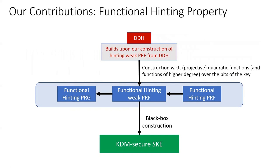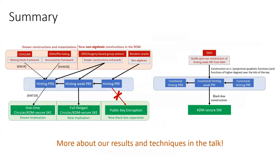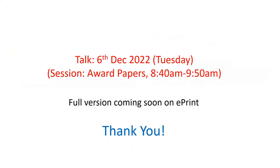Finally, we also show an instantiation of functional hinting weak PRFs from the DDH assumption, where the construction is with respect to the function family consisting of projective quadratic functions and functions of higher degree over the bits of the secret key. For more details about our results and techniques, do tune into our talk in the first session of Asiacrypt 2022. Thank you for your attention and see you at the conference.